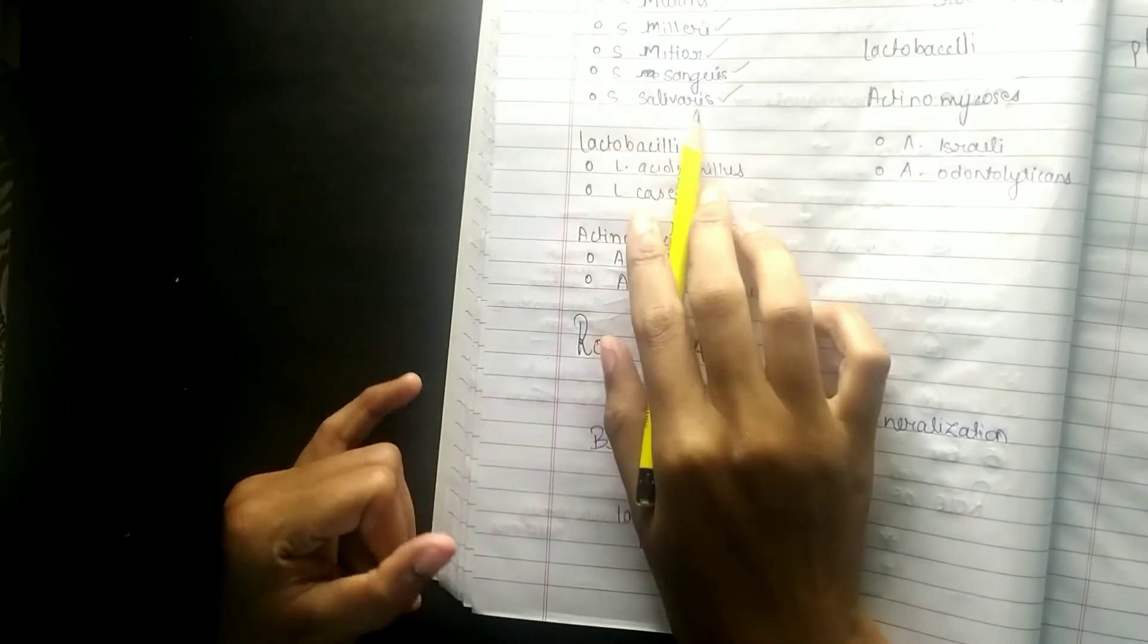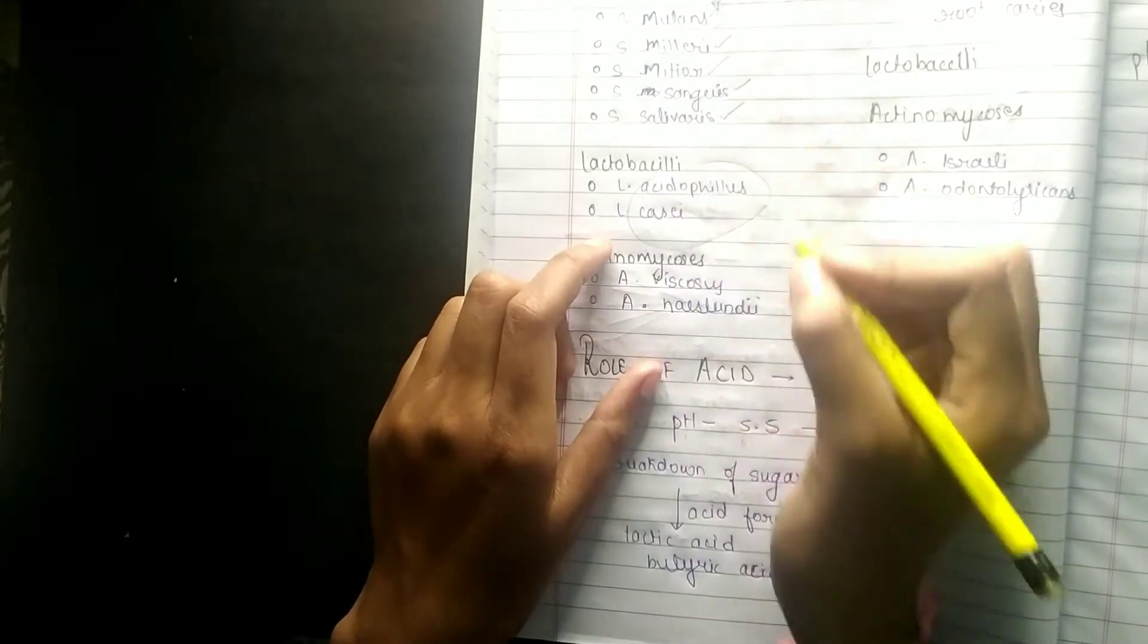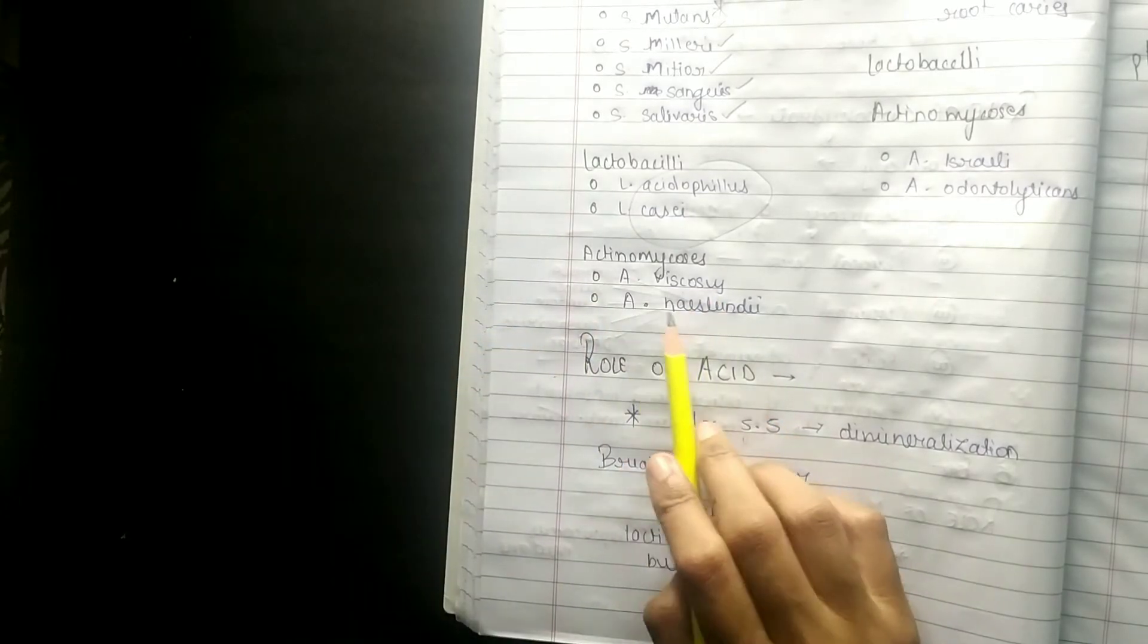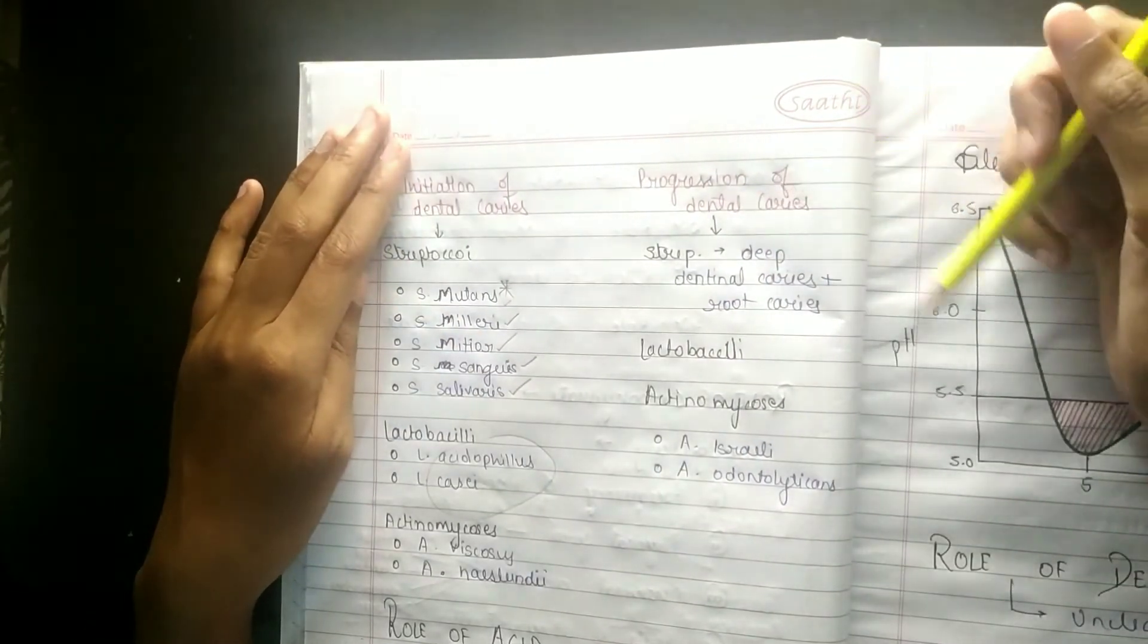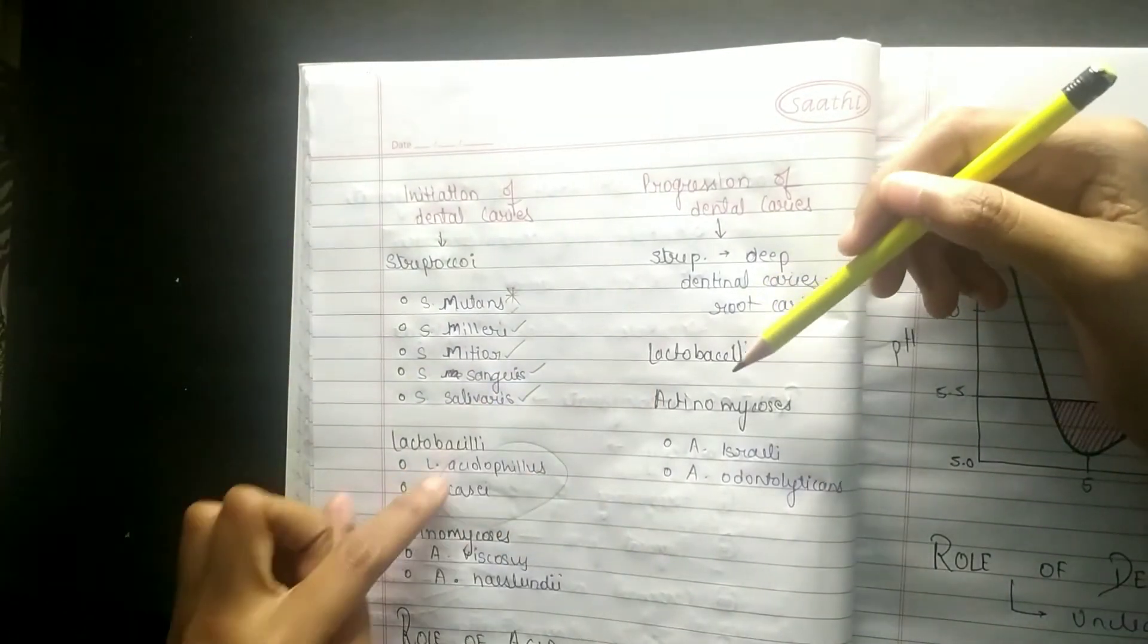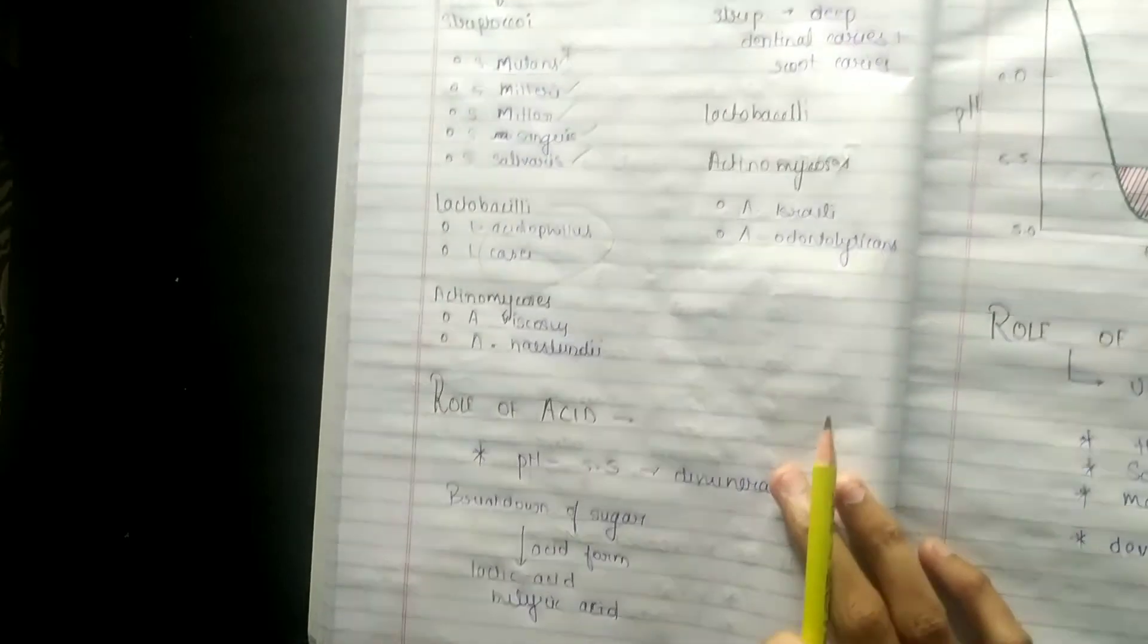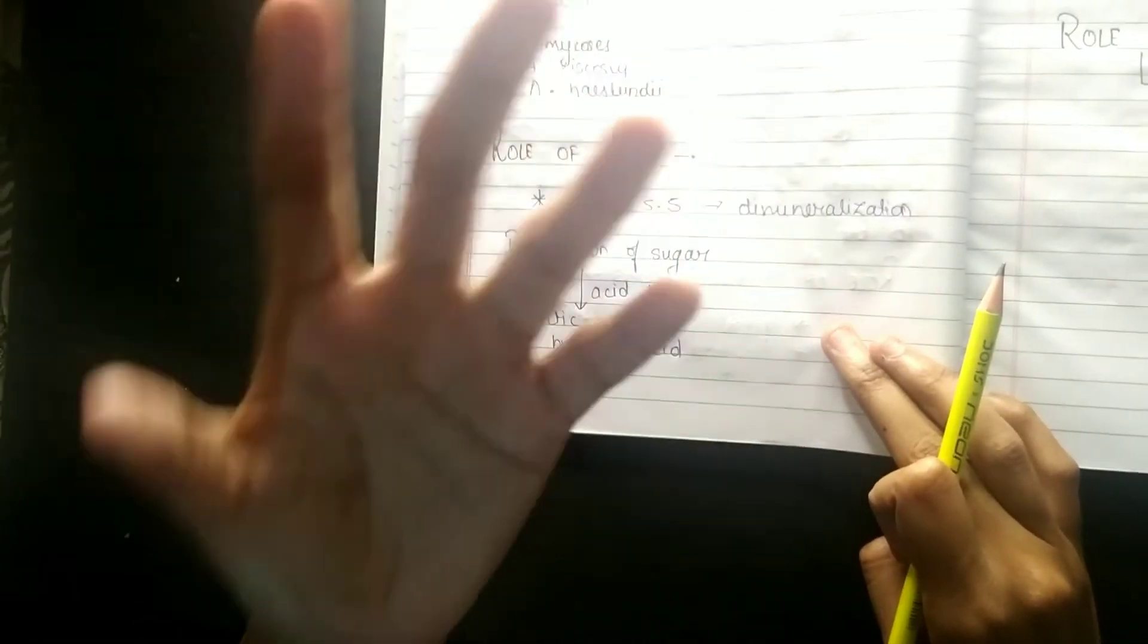Actinomycosis viscus and actinomycosis hazlune. Then progression of dental caries again: streptococci, deep dentinal caries, root caries. Lactobacillus what will happen in actinomycosis israeli and actinomycosis.